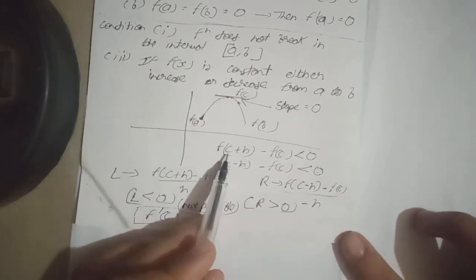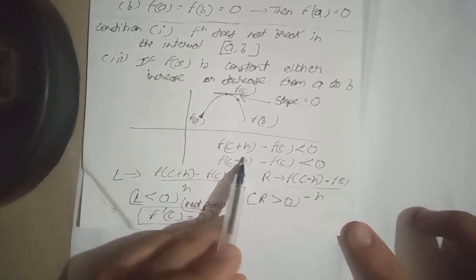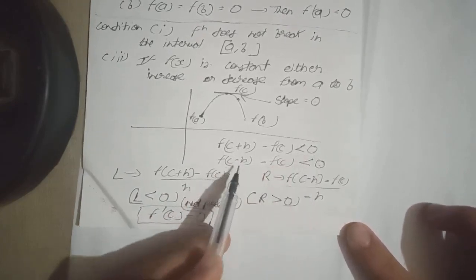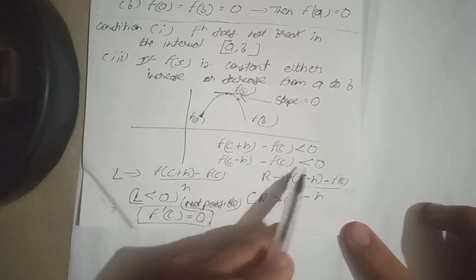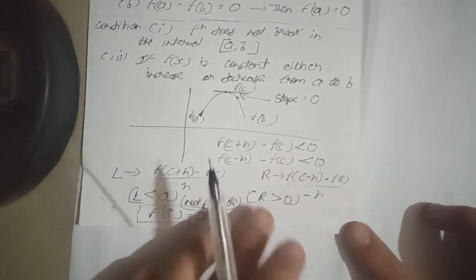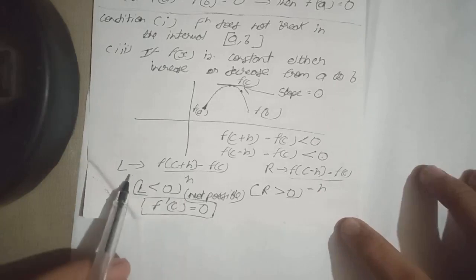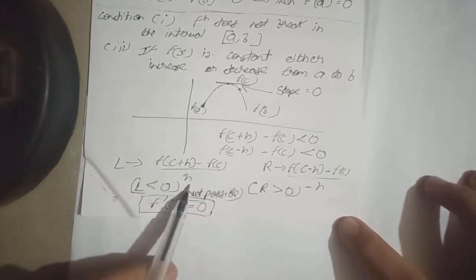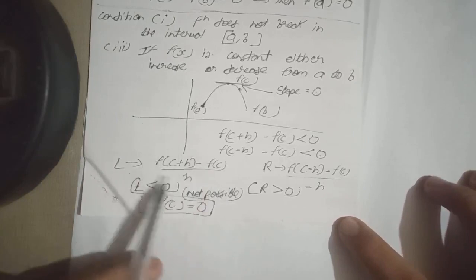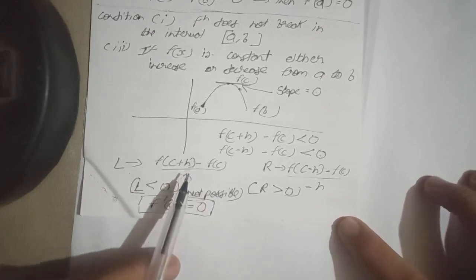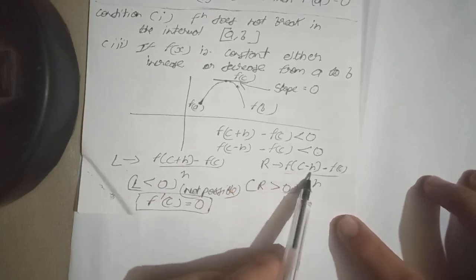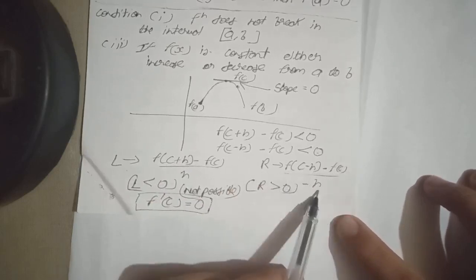Agar mai leta hoong right side me to f(c+h) minus f(c) yeh bhi less than 0 hooga aur f(c-h) minus f(c) yeh bhi less than 0 hooga. To agar mai left side ki baat karu, left hand limit ki baat karu, to f(c+h) minus f(c) by h hooga na. Yeh toh differentiation hota na, yeh toh limits hoti hai left hand side. Aur agar right hand side ki baat karinge toh f(c-h) minus f(c) by minus h.